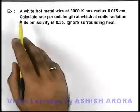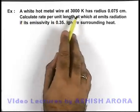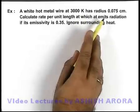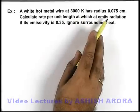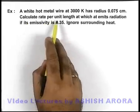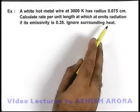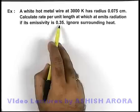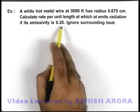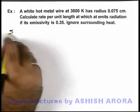In this example, we are given that a white hot metal wire at 3000 kelvin has a radius of 0.075 centimeter. We are required to calculate the rate per unit length at which it emits radiation if its emissivity is 0.35. We are required to ignore the surrounding heat.